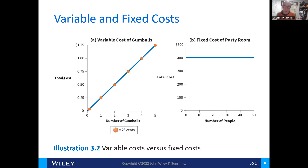Here is a graphical representation of the relationship between fixed and variable costs. On the left we see variable costs for gumballs — the more gumballs we produce, the higher the total cost. With respect to fixed costs, an example being a party room, the fixed cost of the room remains the same regardless of the number of people using that room. Variable costs increase with the level of output; fixed costs remain the same regardless of the level of output.